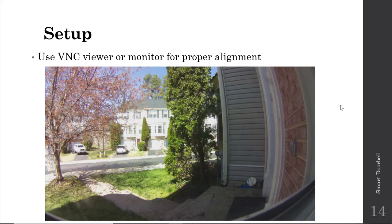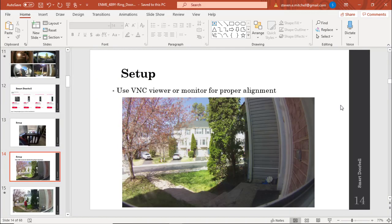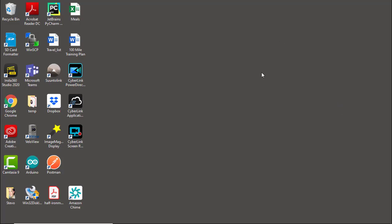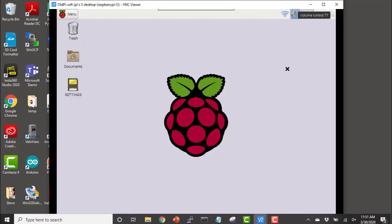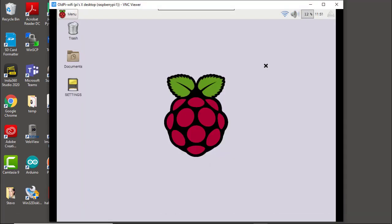Once your Raspberry Pi and camera are mounted, we need to align that camera and make sure we're getting a good view of the scene. I recommend using VNC Viewer or a monitor for proper alignment. The key here is that with something like PuTTY or Terminal you wouldn't be able to view the images, so VNC Viewer is really advantageous for this exercise.